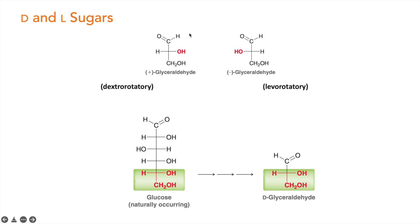Now we will study D and L sugars. In nature, the simplest carbohydrate present is glyceraldehyde, which is present as positive glyceraldehyde. This means it rotates plane-polarized light in the right direction — clockwise — so a positive sign is assigned. Compounds that rotate plane-polarized light to the right are called dextrorotatory compounds.